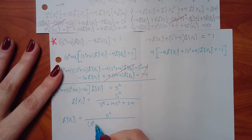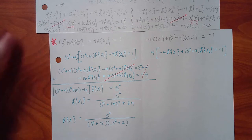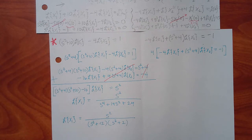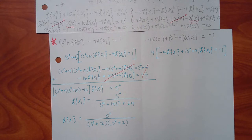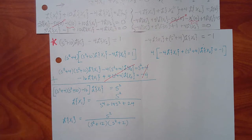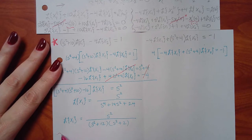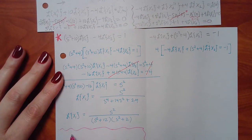Does (S squared plus 12)(S squared plus 2) come out to S to the fourth plus 14S squared plus 24? Yes. But because I have S squared plus a positive and S squared plus a positive, those can't be factored further. You're probably going to have cosines or sines in the answer when you're stuck with S squareds and plus signs. So I'm going to do partial fraction decomposition on S squared over (S squared plus 12)(S squared plus 2).